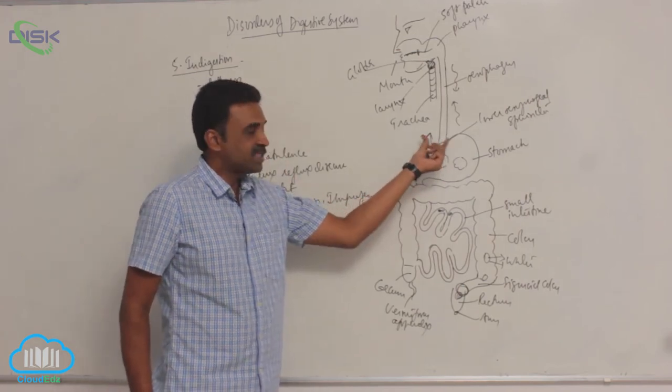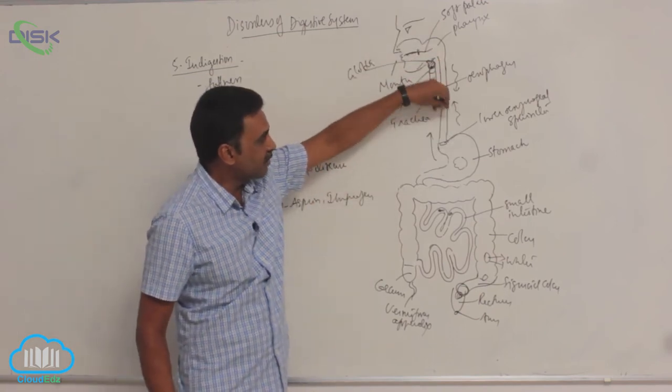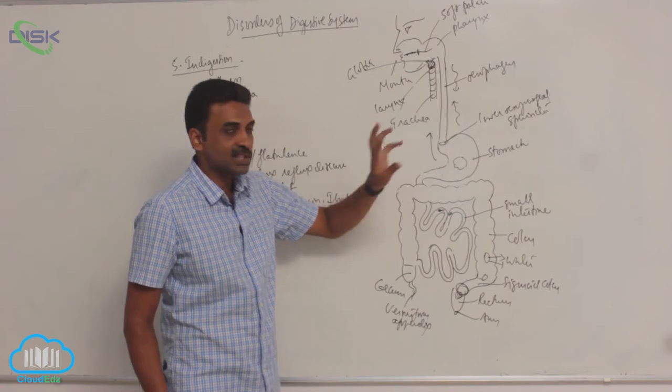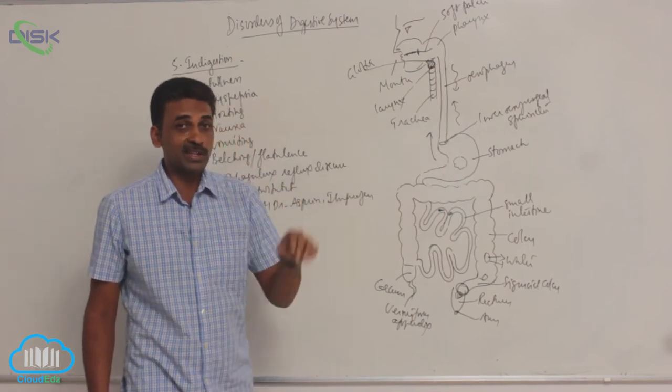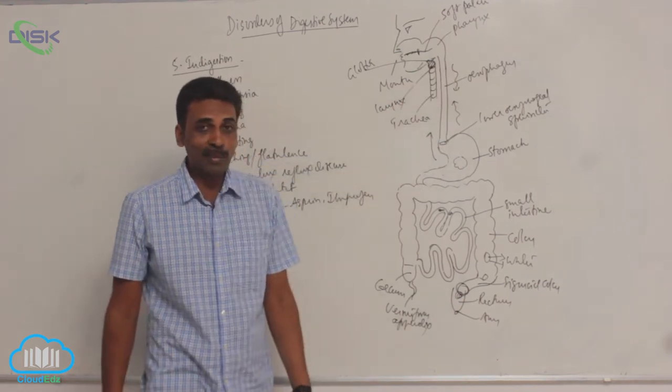Whenever food is coming, the lower esophageal sphincter opens. After food has entered the stomach, it closes. This prevents regurgitation and prevents the food from going back.